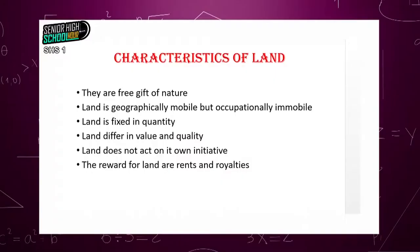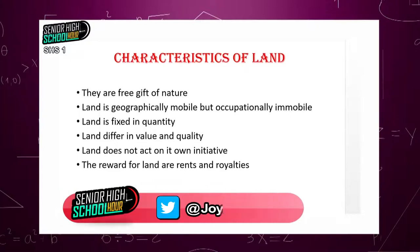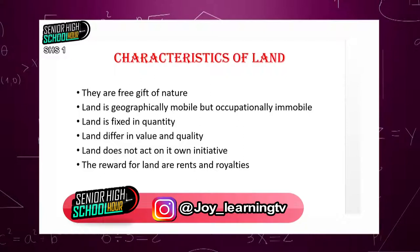Let us look at the characteristics of land. The first one is that land is a free gift of nature. Land as a factor of production comes from nature, meaning no man did anything to bring it into existence. Its existence doesn't depend on man — we came to meet trees, we came to meet water bodies. Nobody created the sea.